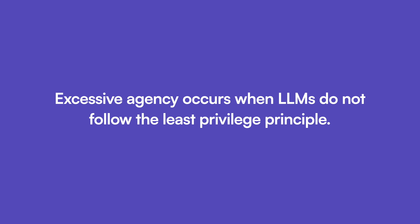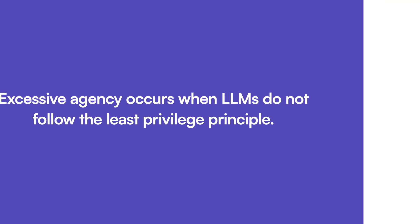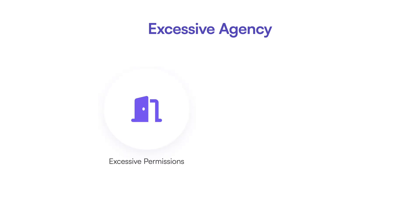Excessive agency occurs when LLM plugins and extensions do not follow the principle of least privilege. Due to the probabilistic behavior of LLMs, their output might not always be foreseeable or in harmony with the desired operational objectives, rendering excessive autonomy a significant hazard. Excessive autonomy can be broken down into two different categories: excessive permissions and excessive autonomy.